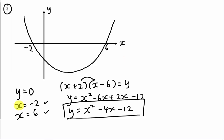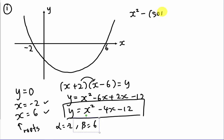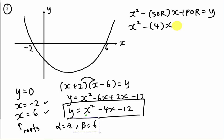There is another method. We call x = −2 and x = 6 the roots, so α = −2 and β = 6. Using the formula: x² − (sum of roots)x + (product of roots) = y. Sum of roots: 6 + (−2) = 4. Product of roots: (−2)(6) = −12. So y = x² − 4x − 12.